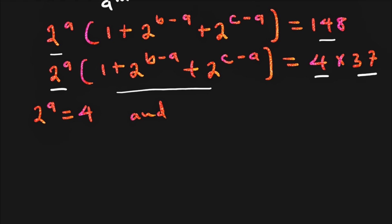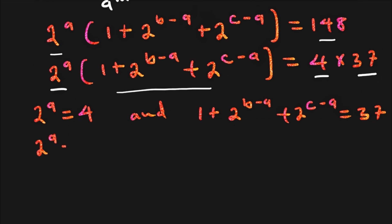We compare the left hand side and right hand side. We can compare 2 power a with 4, so 2 power a equals 4. For the first case, we write 4 in base 2 as 2 power 2. The bases are the same — 2 and 2 — so the powers are also the same. Therefore a is equal to 2, and that is our first solution.